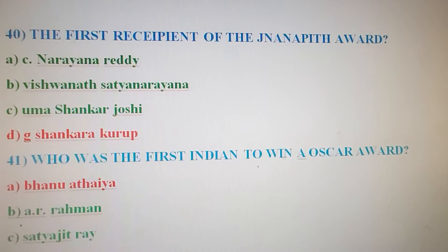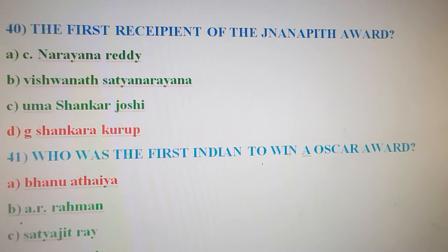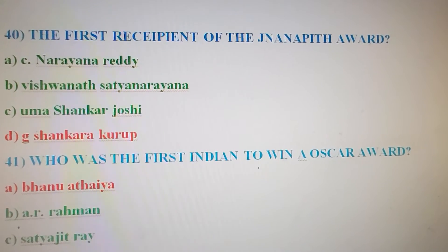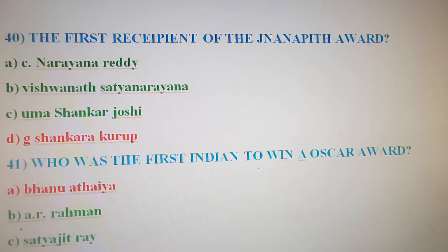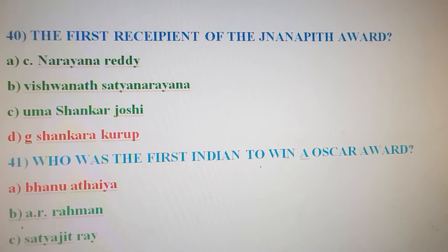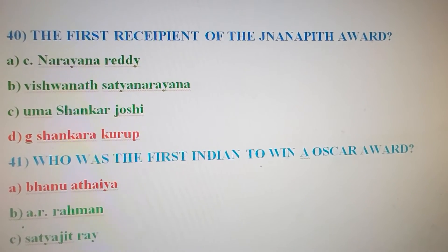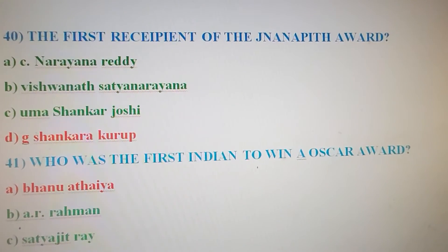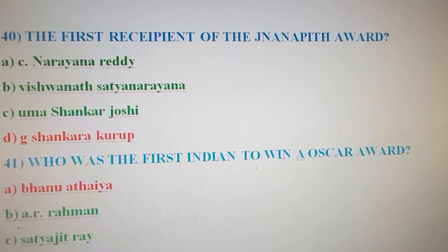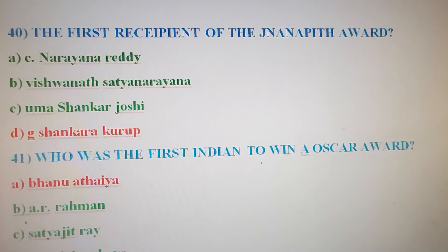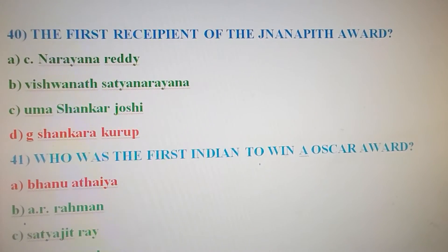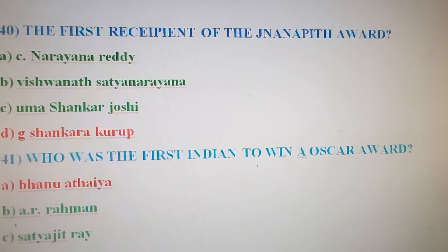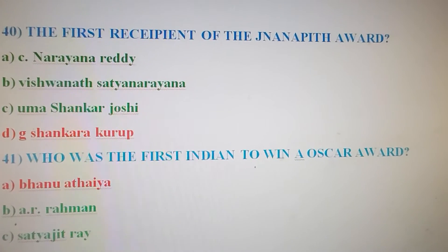Next, 40th question: Who was the first recipient of the Jnanpith Award? Option A: C. Narayana Reddy. Option B: Viswanatha Satyanarayana. Option C: Umashankar Joshi. Option D: G. Sankara Kurup. The correct answer is Option D, G. Sankara Kurup.